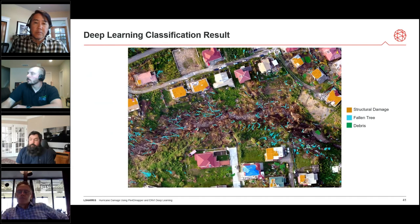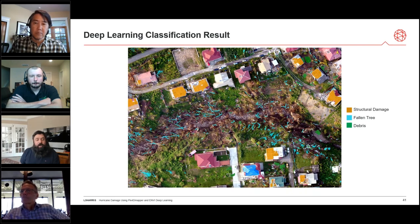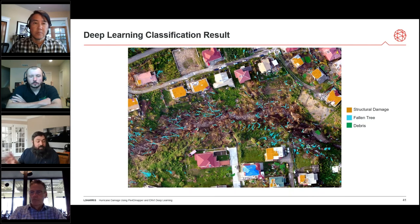In the end you get two products. The main one is the classification product. With the height information incorporated, the structural damage shown in orange is very well contained within buildings that have higher absolute height, we see fallen trees throughout the creek bed, and debris littered throughout. The classes are not overlapping where they shouldn't be — no fallen trees on top of structural damage areas. We can save this out as a GIS output and send it to first responders to show exactly where the damage is.